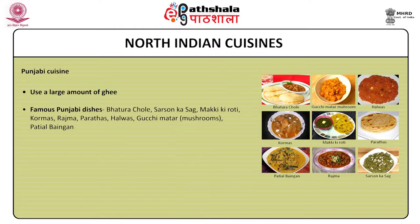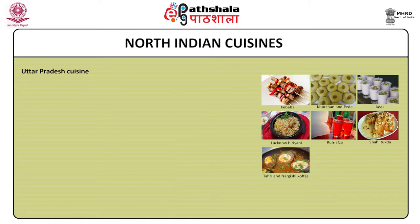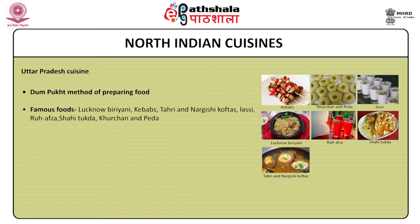Uttar Pradesh cuisine. The exceptional feature of the avadhi tradition of cooking in Uttar Pradesh is the dum-cooked process of preparing food. In this exclusive style, food is sealed in large pots called handi and placed over slow fire, allowing the ingredients to be cooked in their own juices. Famous foods include Lucknow biryani, kebab, tahiri and nargisi koftas, litti, rooh afza, shahi tukda and peda.